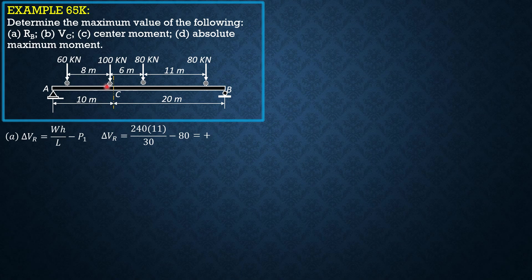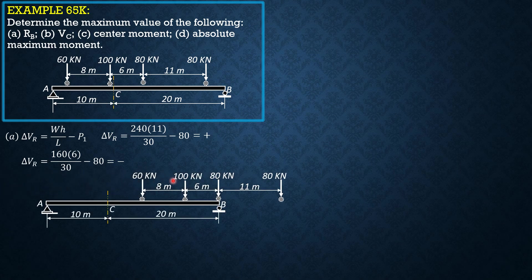Next, we allow the 100 kN load to be over B. When that happens, P1 is 60 and W would be 100 plus 60, which is 160. H is 6, so delta V is 160 times 6 over 30 minus 80, and this time it is negative. So the preceding position satisfies the criterion — that is, the 80 kN load over B gives maximum RB.